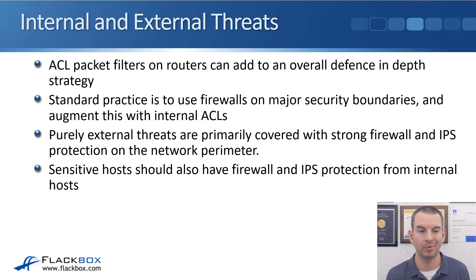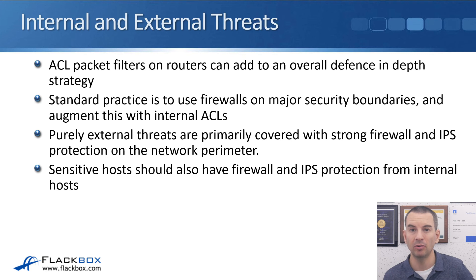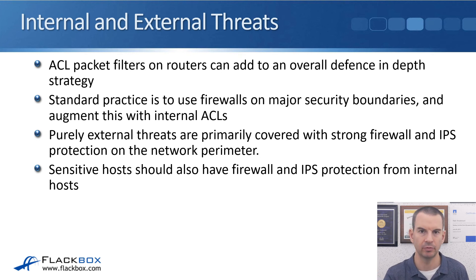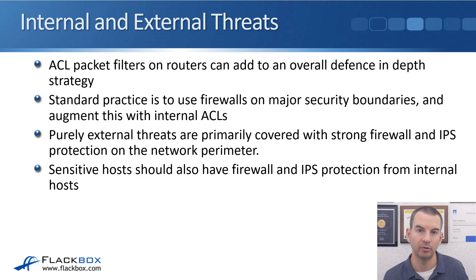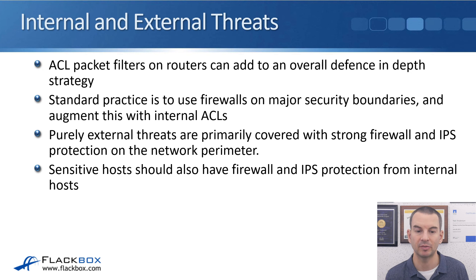You might wonder why we use ACLs at all if firewalls are more secure. The answer is that they complement each other in a defense-in-depth strategy. You don't want a firewall to be your only line of defense — if an attacker gets through it, you want additional mechanisms. Firewalls primarily guard against external threats, but you also need to guard internal threats. Standard practice is to use firewalls at major security boundaries like the internet edge, and augment this with internal ACLs. Purely external threats are covered by strong firewall and IPS protection; sensitive hosts should also have firewall and IPS protection from internal hosts.